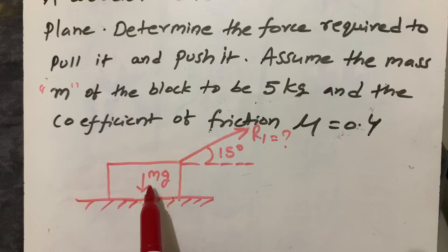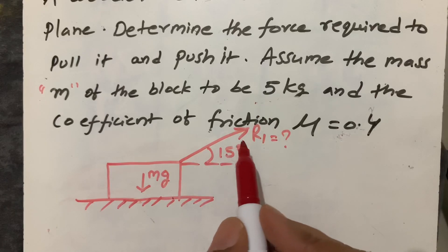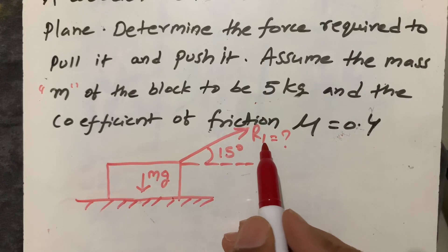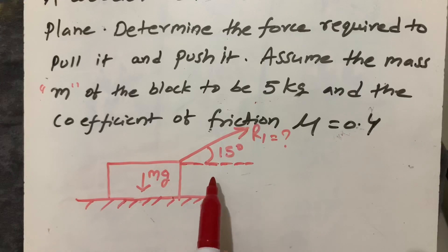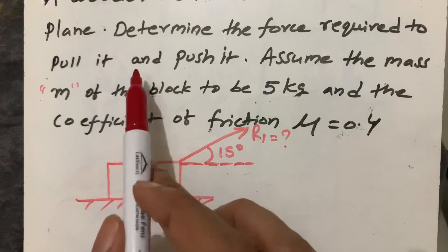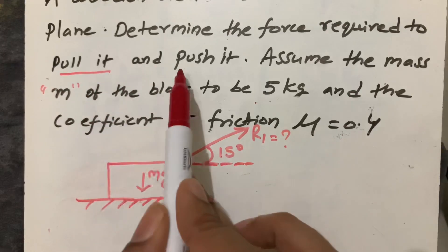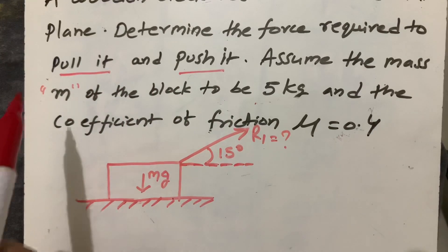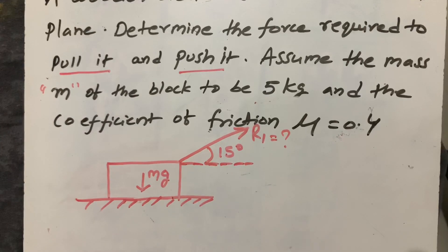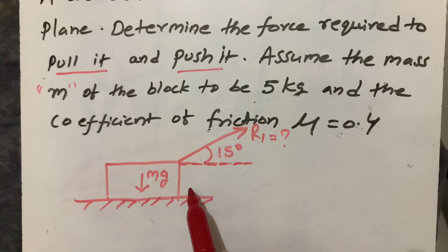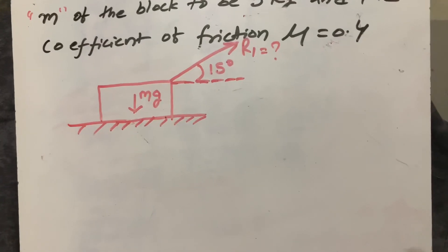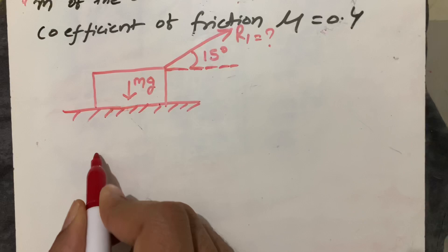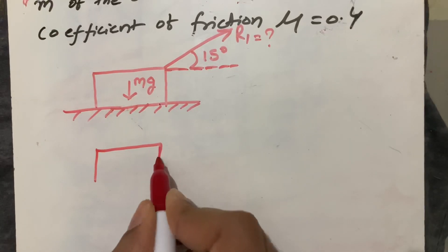The mass m and g is the gravitational force acting downwards due to gravity. The force required to pull is R1, which we have to find, and the angle is 15 degrees from the axis. First we are finding the pull condition, so first we have to draw the free body diagram for this wooden block.